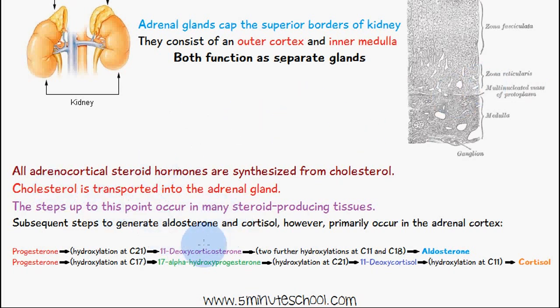The cholesterol transporting into the gland occurs in most steroid-producing tissues. The steps for the production of aldosterone and cortisol primarily occur within the adrenal cortex.